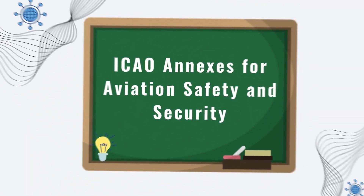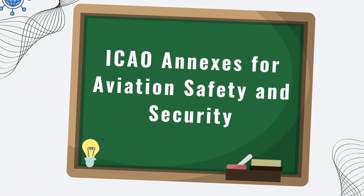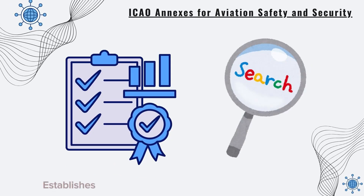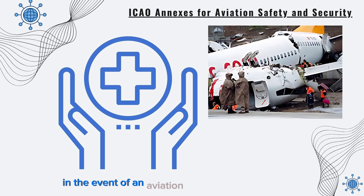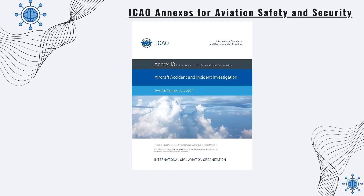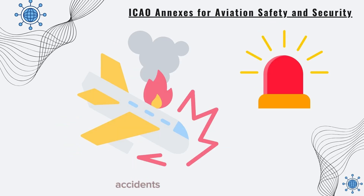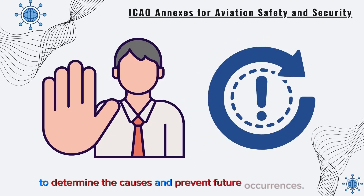Finally, we'll cover the ICAO Annexes for Aviation Safety and Security. Annex 12, Search and Rescue, establishes standards for search and rescue operations in the event of an aviation accident or incident. Annex 13, Investigation of Accidents and Incidents of Aviation, establishes standards for the investigation of aviation accidents and incidents to determine the causes and prevent future occurrences.